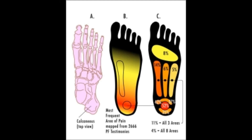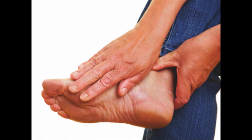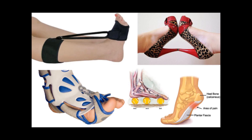If home treatments and over-the-counter anti-inflammatory drugs don't ease the pain, an injection of a corticosteroid directly into the damaged section of the ligament can be given. Your doctor can do this in his or her office and may use an ultrasound device to help determine the best place for the injection. Corticosteroids can also be administered on the skin of your heel or the arch of your foot, and then a painless electrical current is applied to let the steroid pass through your skin and into the muscle.